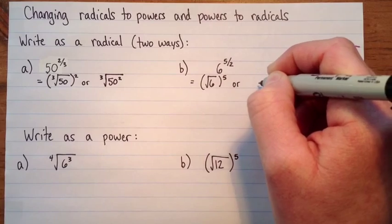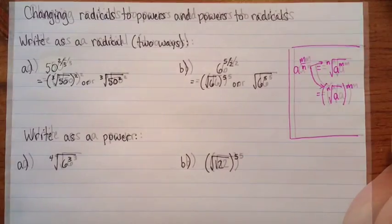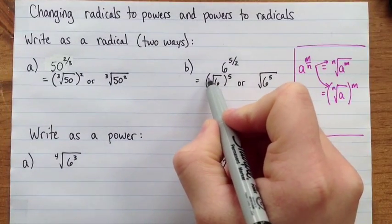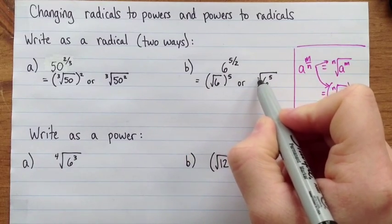Or I can do six to the exponent five, and then take the square root of that. So remember as you're looking at this, if you're wondering where the two went, remember that a square root, we don't need to write the two there. You can if you want, but usually we leave it off.